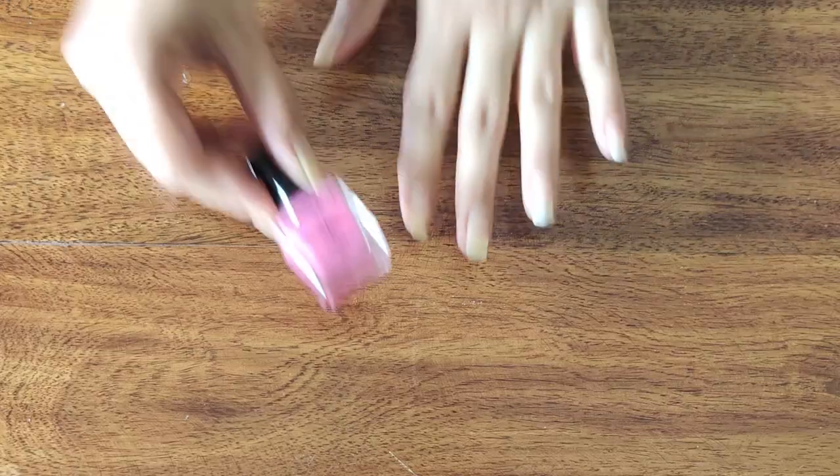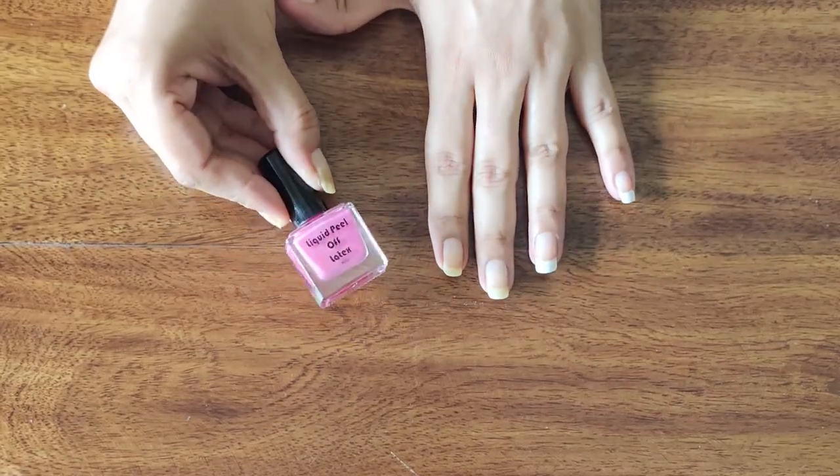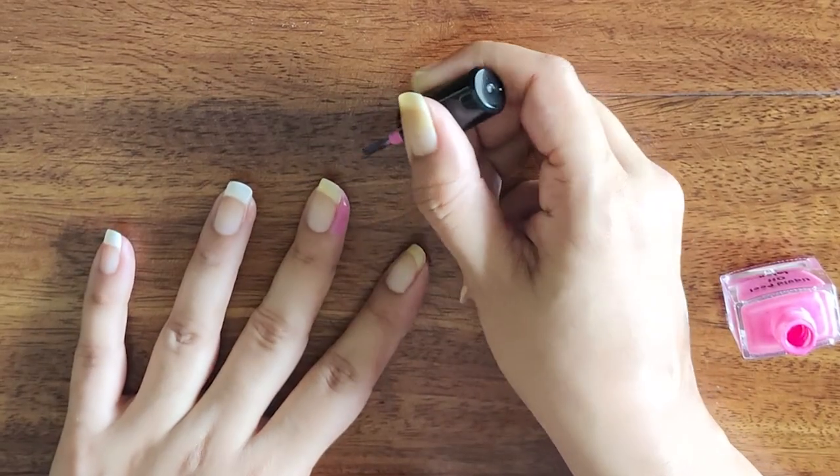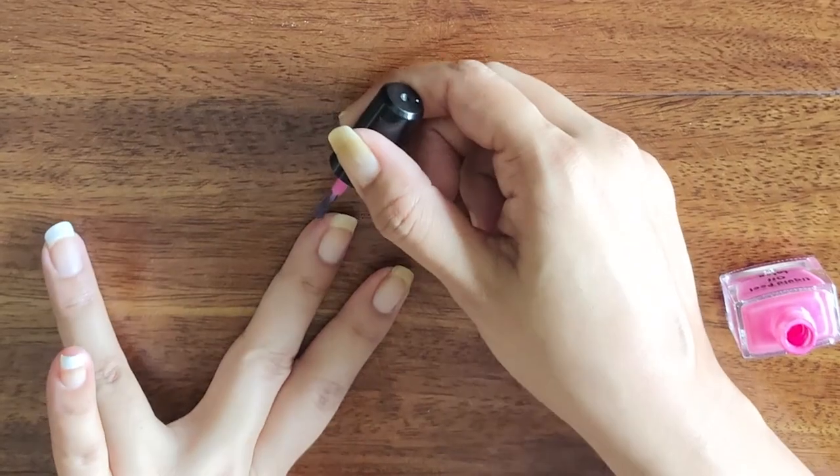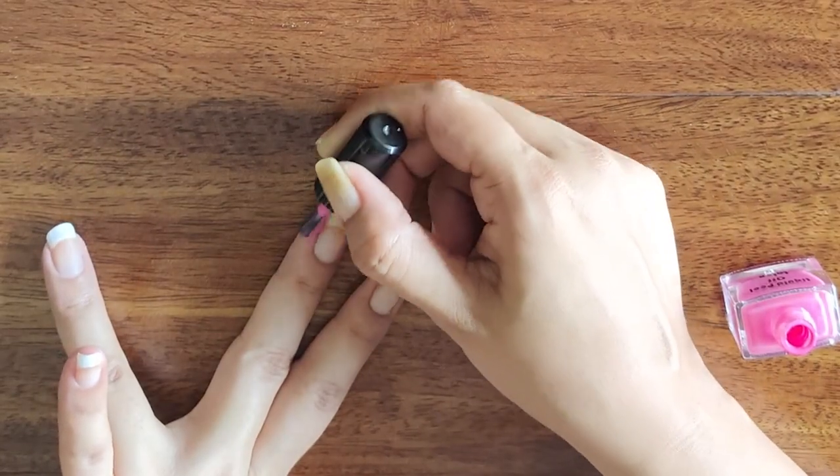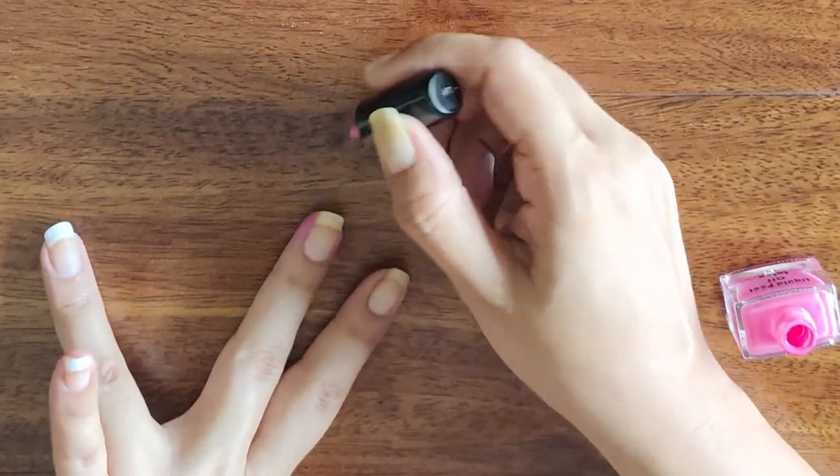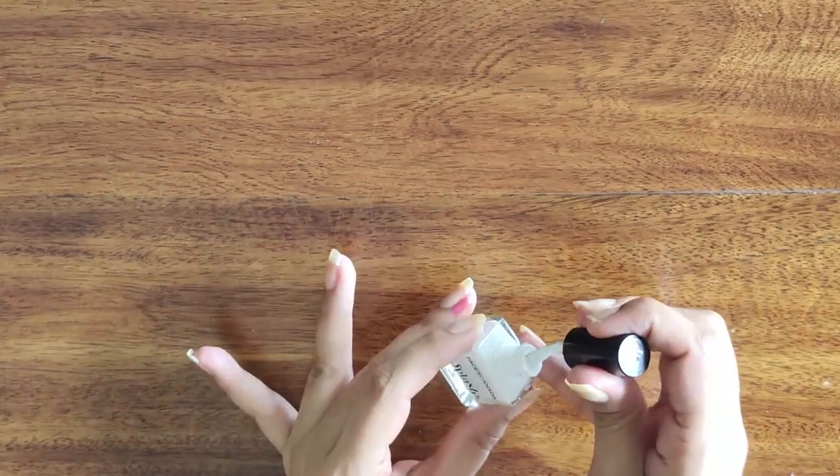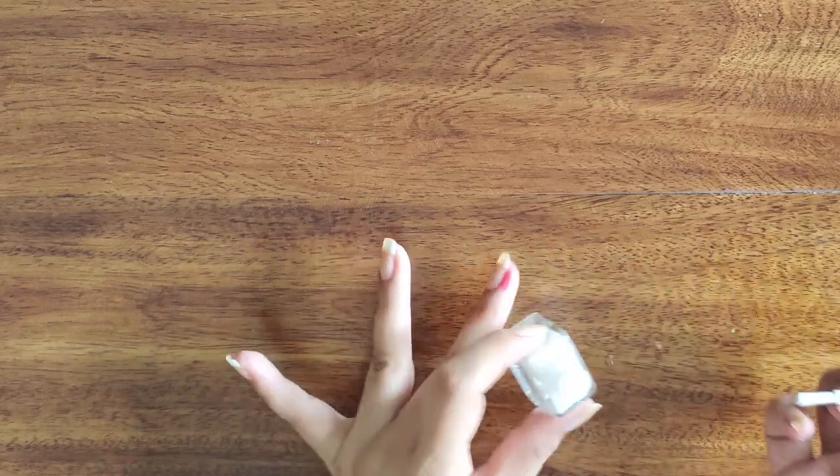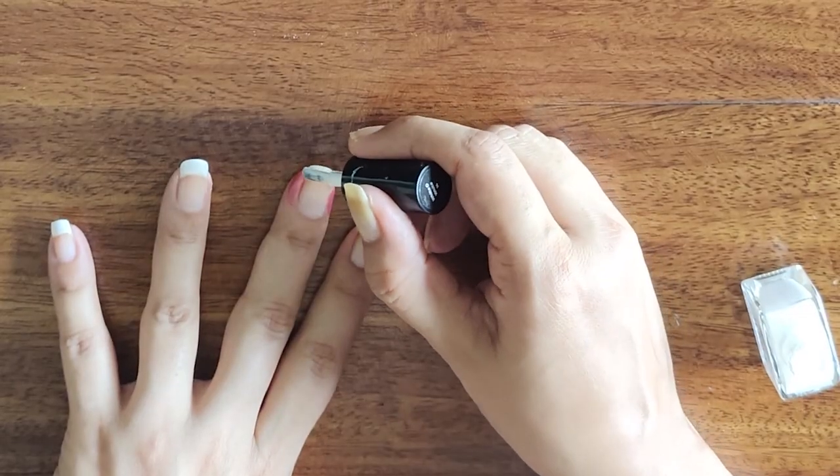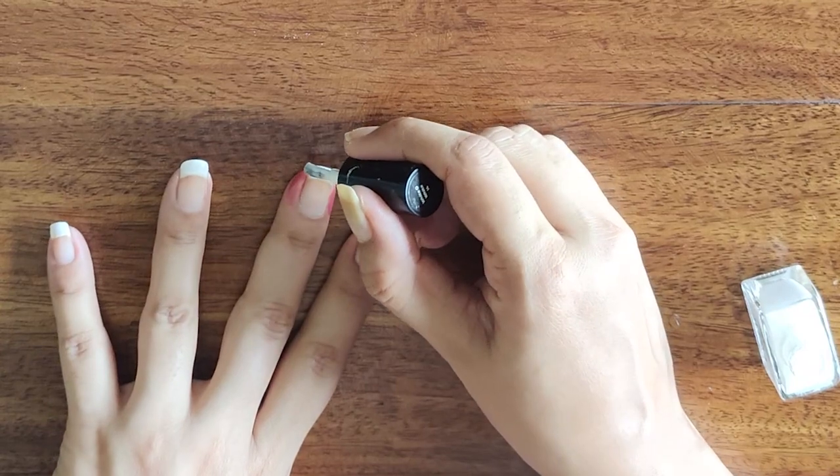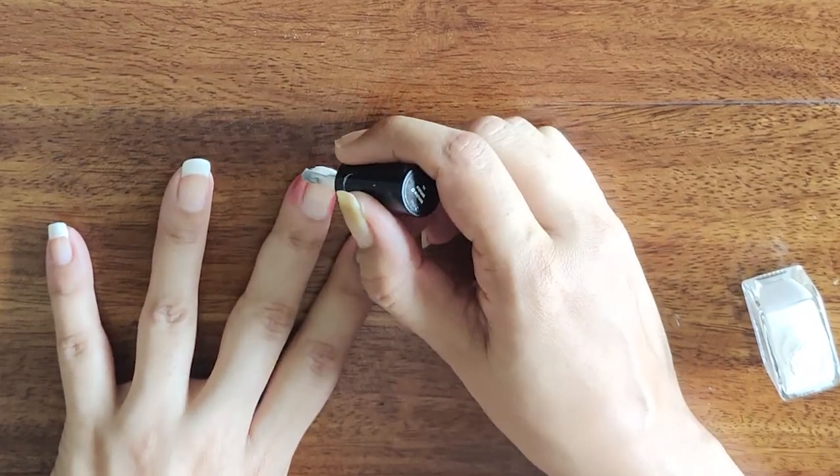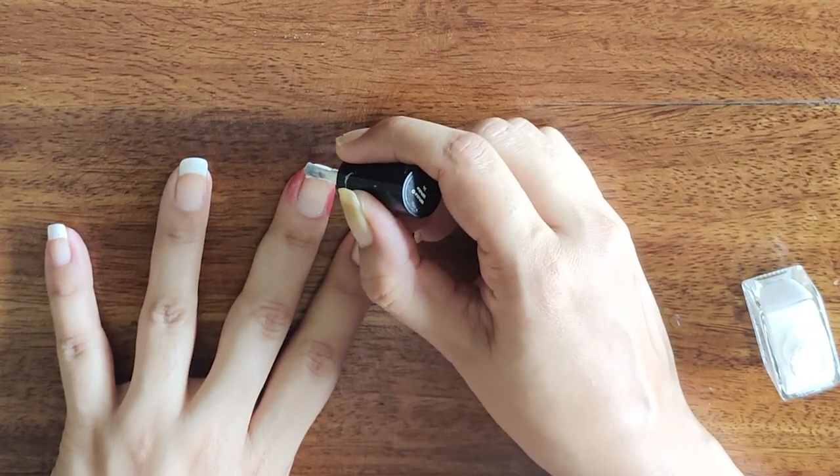If you feel like you're making a mess, then you can always put some peel-off latex on either side of your nail. And you're good.